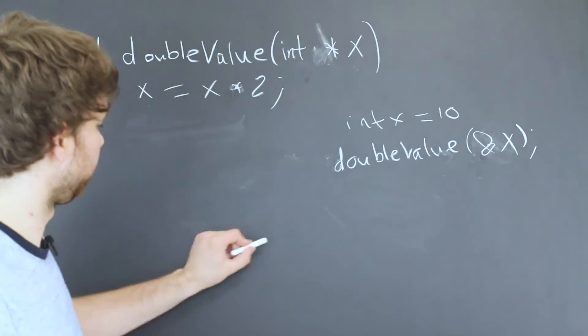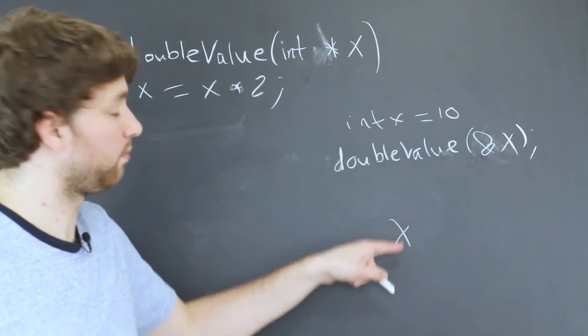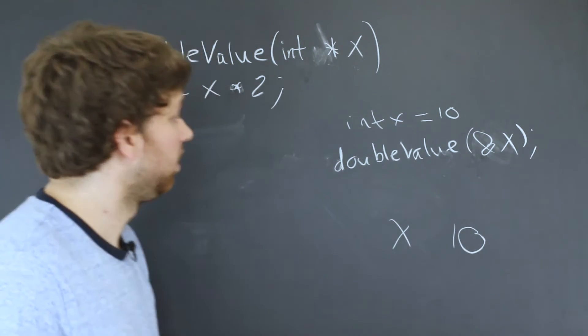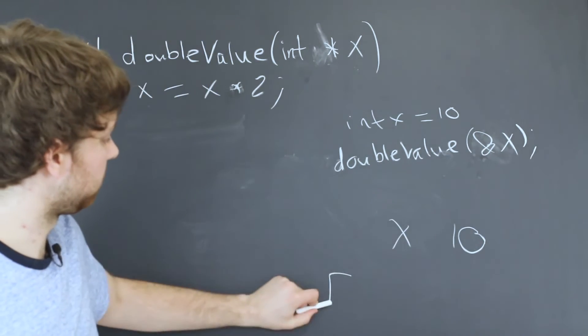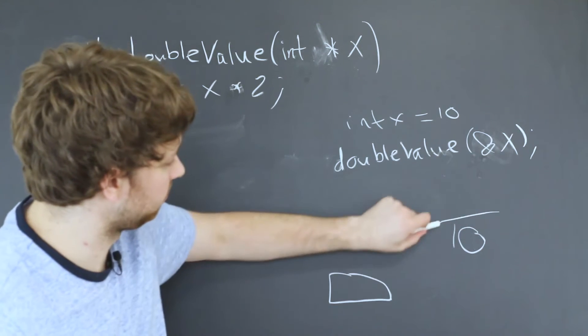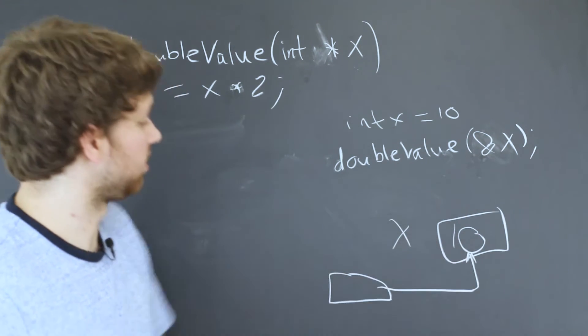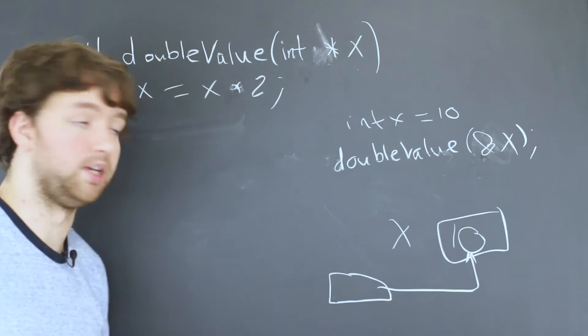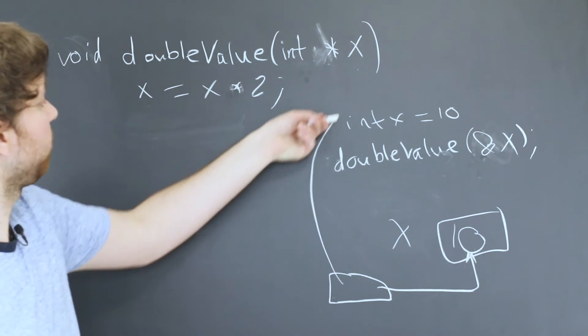So what's happening is we have this value x in our function. It has the value 10. We create a pointer to it. So let's just say this is a pointer and it points to this value. We give this pointer value, whatever the memory location is, to this parameter.